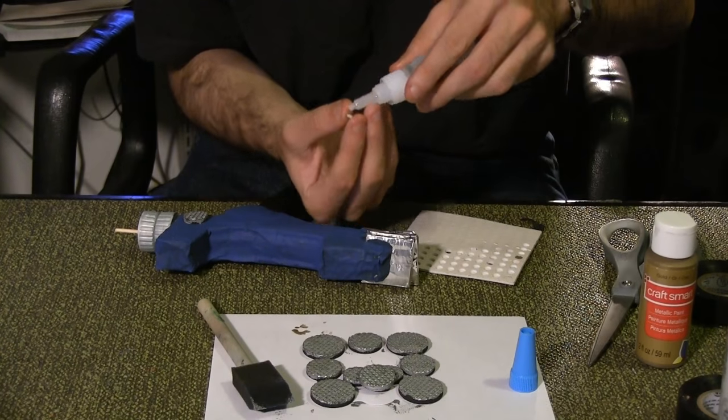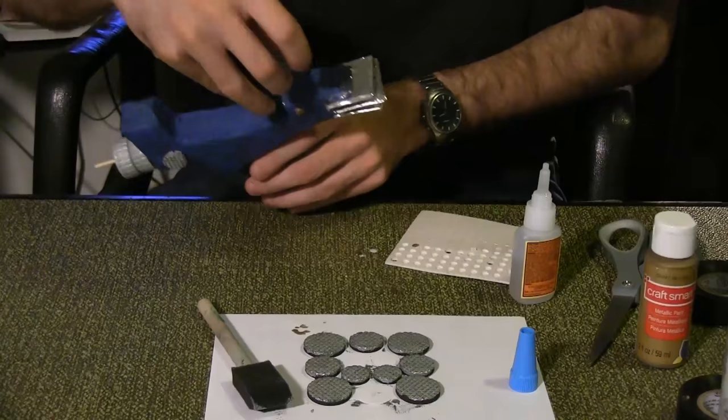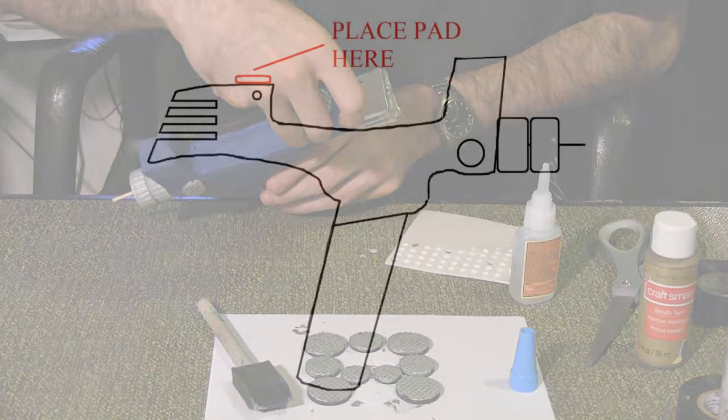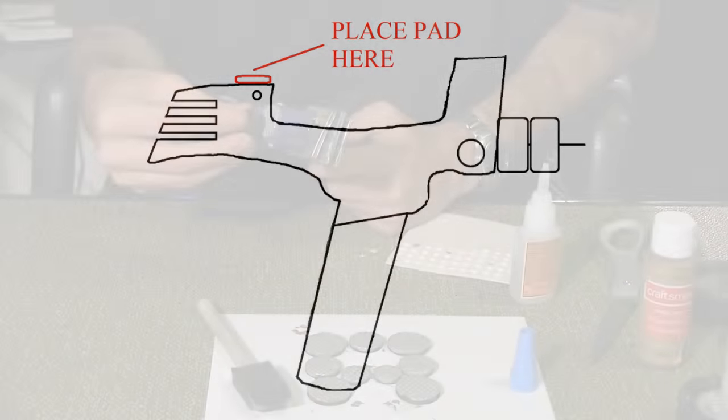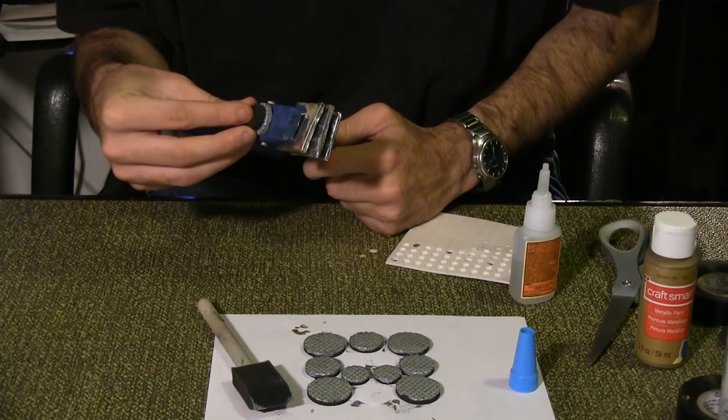For extra hold, I gave it a drop of super glue. Place a medium silver furniture pad here. Place a small black furniture pad on top of that one.